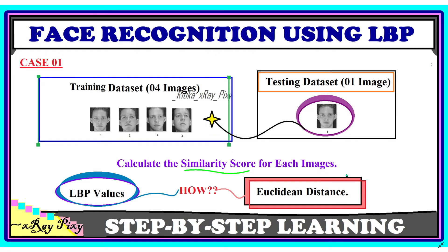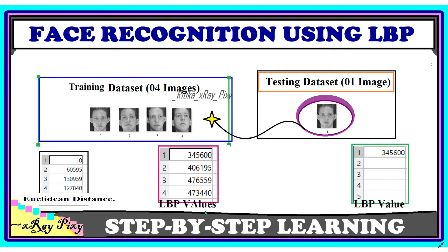We calculate the similarity score by computing the LBP values for each digital image, then calculating the Euclidean distance. If the Euclidean distance between two images is zero, a match is found. You can see the LBP values calculated for all four training images after operations like image pre-processing, feature extraction, and histogram construction. For the testing image, we also have its LBP value, and the Euclidean distance comes out to zero — confirming a match.